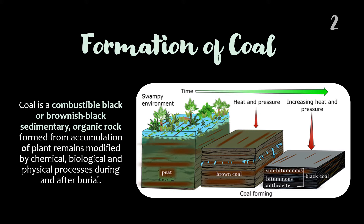This image clearly shows the gradual conversion of dead vegetation into coal. Coal is a combustible black or brownish-black sedimentary organic rock formed from accumulation of plant remains modified by chemical, biological, and physical processes during and after burial. It contains mostly carbon with variable amounts of other elements, mainly hydrogen, oxygen, sulfur, and nitrogen, as well as some inorganic constituents, minerals, and water.